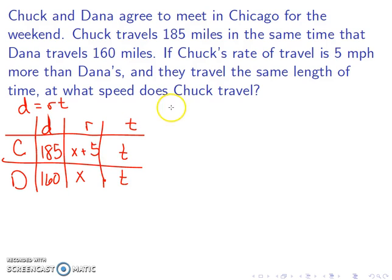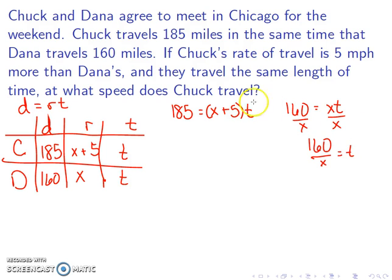So my first equation, distance is equal to rate times time. And my second equation, distance is equal to rate times time. The easiest way to do this one would be to take this second equation and divide by x to get 160 over x is equal to t. And now we'll substitute that into this first equation. So instead of t, I'm going to have 160 over x.